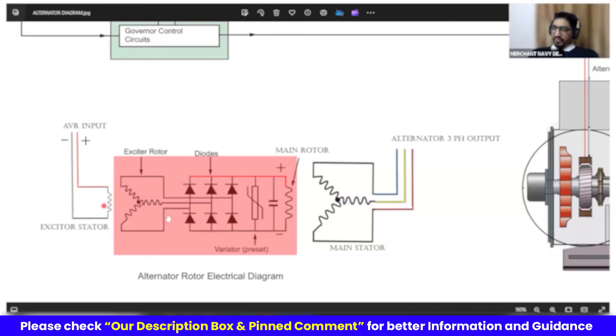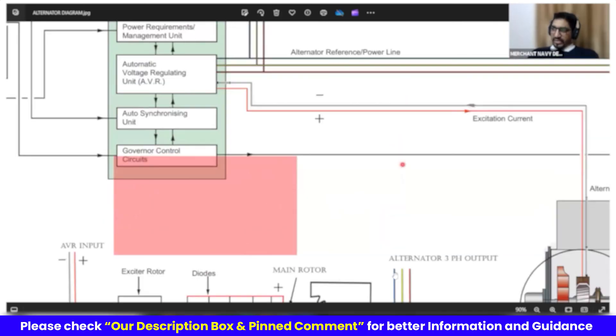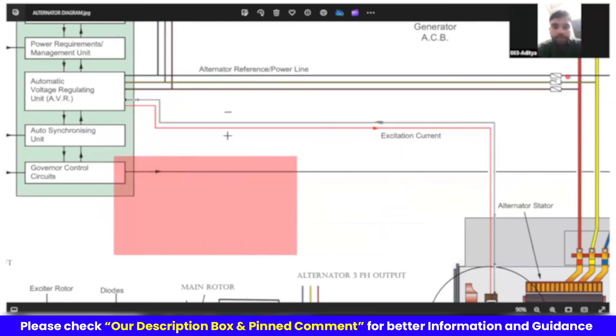Point here is AVR gives DC to here. It produces AC here. This AC comes back as a DC here. And this DC is used to produce AC here. And this is what we use. Your question is, who gives DC to the exciter? AVR gives it. Where does AVR get this one from? From output only.